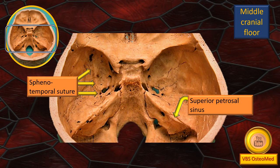Next, there is a suture with three arrows pointing along its length. It is a suture connecting the greater wing of the sphenoid with the squamous part of the temporal bone. On the other side, as already mentioned, the upper border of the petrous temporal hosts the superior petrosal venous sinus.